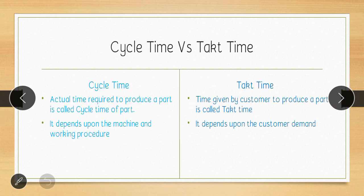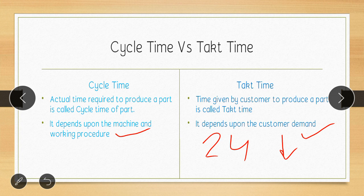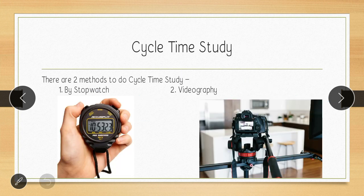The difference between cycle time and takt time: cycle time is the actual time in which we produce a part, while takt time is the time given by the customer to produce a part. Cycle time depends on the machine and working procedure, whereas takt time depends on customer demand and total available time. If demand reduces but time stays at 24 days, takt time increases.